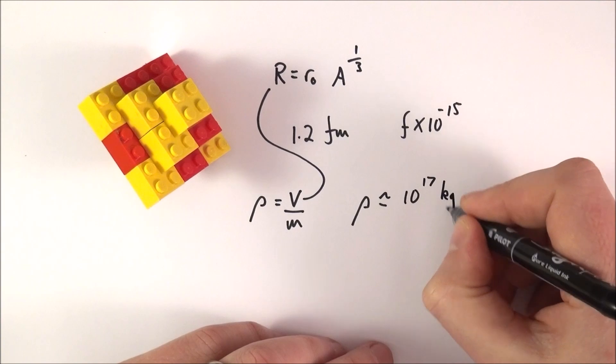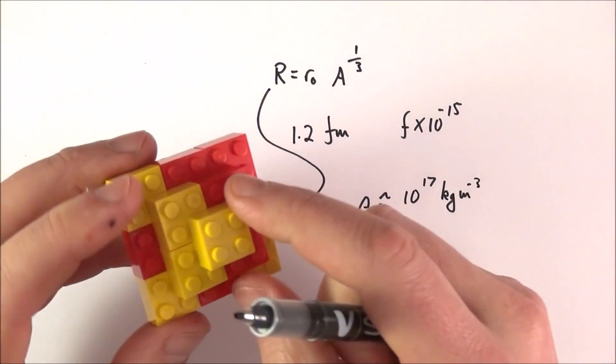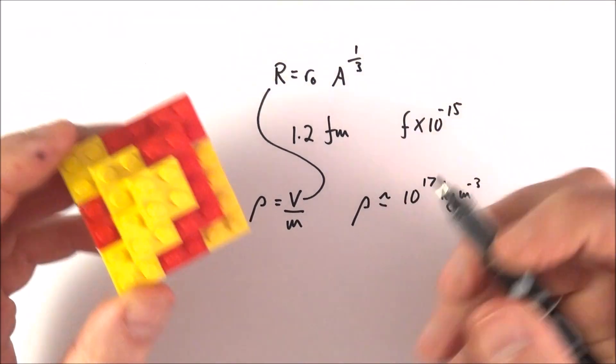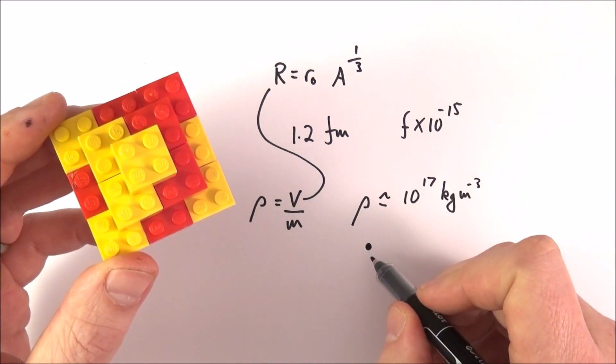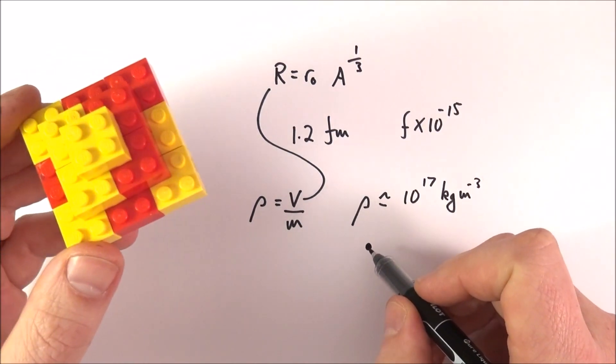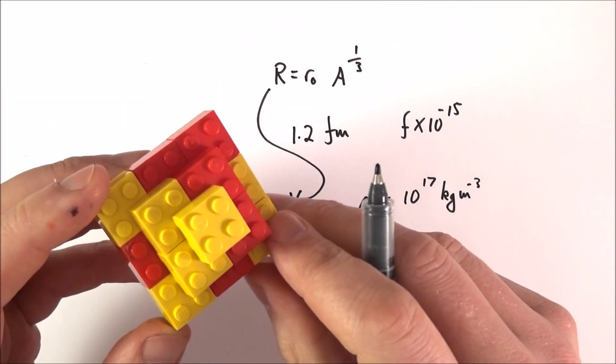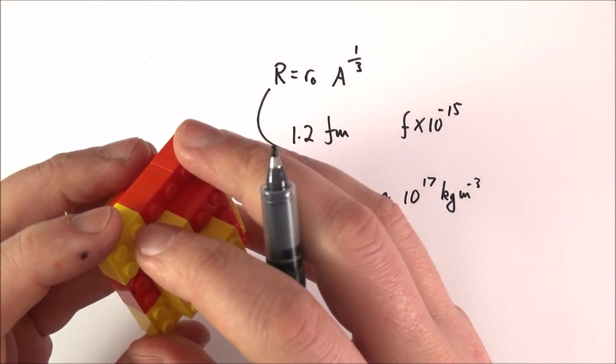If you had a cubic meter of a nucleus—a meter by a meter by a meter—it would be incredibly heavy. Alternatively, you could have something very small, perhaps something the size of this, which might contain hundreds and hundreds of tons of material. That's a bit about nuclear density. What I'd like to look at next is a bit more about what's inside this.